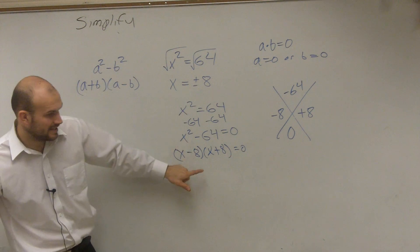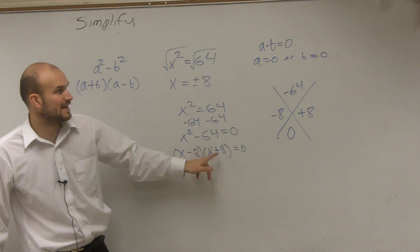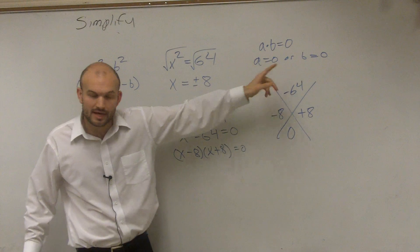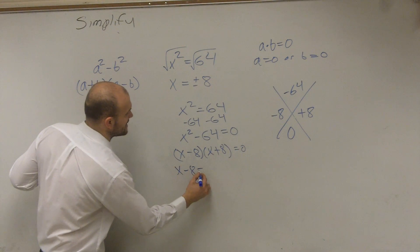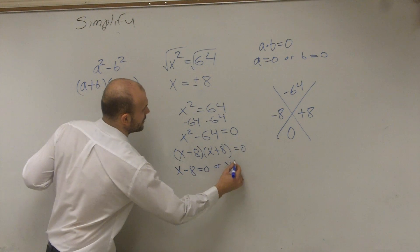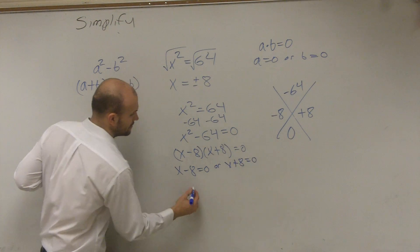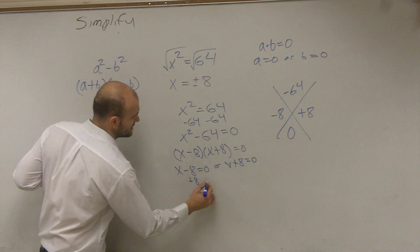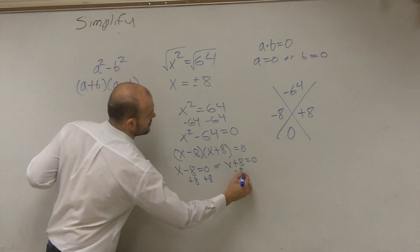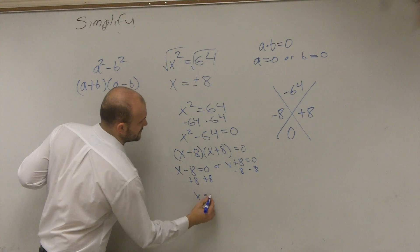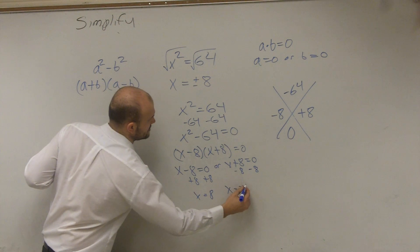So by factoring this, have I now produced a multiplication that equals zero? Yes. So now, what you can say is x - 8 = 0 or x + 8 = 0. Solving for x, you get x = 8 and x = -8.